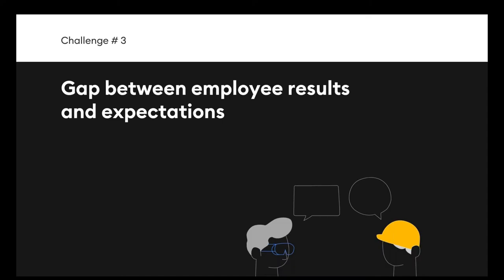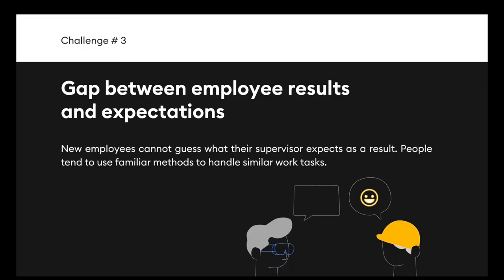The next challenge is the discrepancy between the employee's initial results and training expectations. For example, if you ask an engineer to design a car, one person makes it compact with two doors and a small trunk, while another makes it a huge jeep with four doors and plenty of space for luggage. They're both right because the task was to design a car. But the result the mentor expected might have been something else entirely. New employees can't guess what their supervisor expects. If you give them a clear picture of what is expected and what the supervisor wants to see as an outcome, it can reduce overall training time by up to 10%.